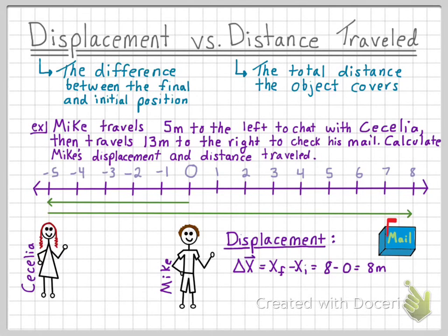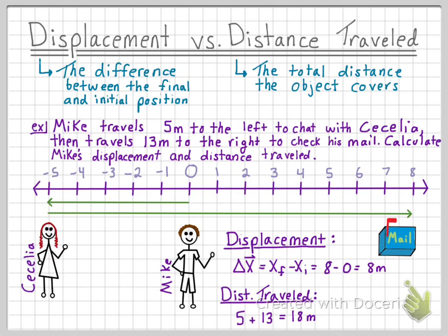Now, let's look at the distance Mike traveled. We know that he covered 5 meters to go talk to Cecilia, and then 13 meters to go check his mailbox. Once we add these two together, we find that Mike covered a total distance of 18 meters. Take note that the distance traveled and the displacement are two very different values, because they mean two different things.